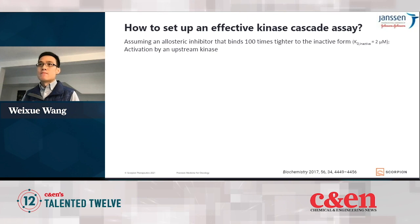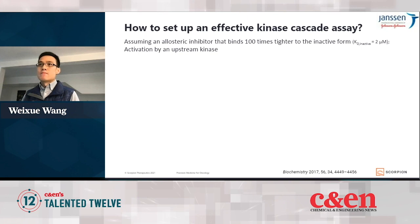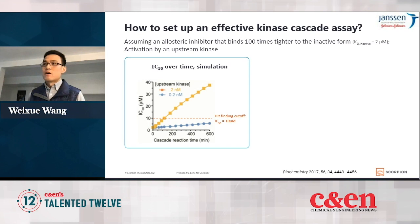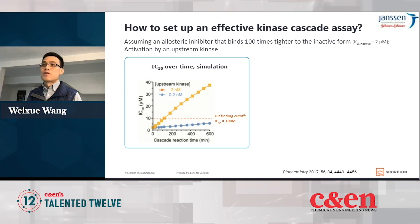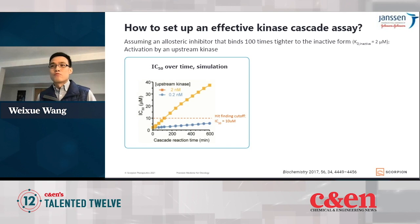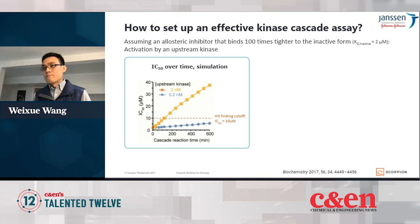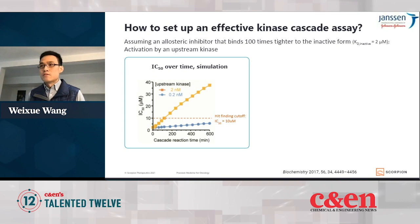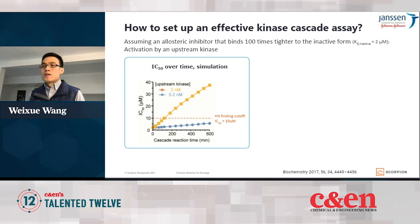Here I show one example. Assuming we're testing an allosteric inhibitor that binds 100 times tighter to the inactive kinase, and activation is achieved by adding upstream kinase. The simulation shows that the IC50 value — the concentration required for inhibiting 50% of the kinase activity — would increase over time. In other words, the compound would appear to be less potent over time in this type of assay. You'll also notice that how fast the IC50 value increases is dependent on how fast the kinase is activated.